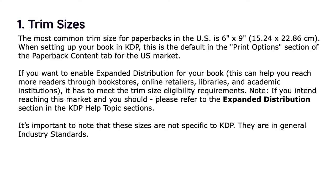Trim size can be a little confusing but I'll try to sort that out. The most common trim size for paperbacks in the US is 6 inches by 9 inches. When setting up your book in KDP, this is the default in the print options section of the paperback content tab. There is a difference for the UK and European market. If you want to enable expanded distribution with KDP — distributing through bookstores, online retailers, libraries — it has to meet the trim size eligibility requirements.